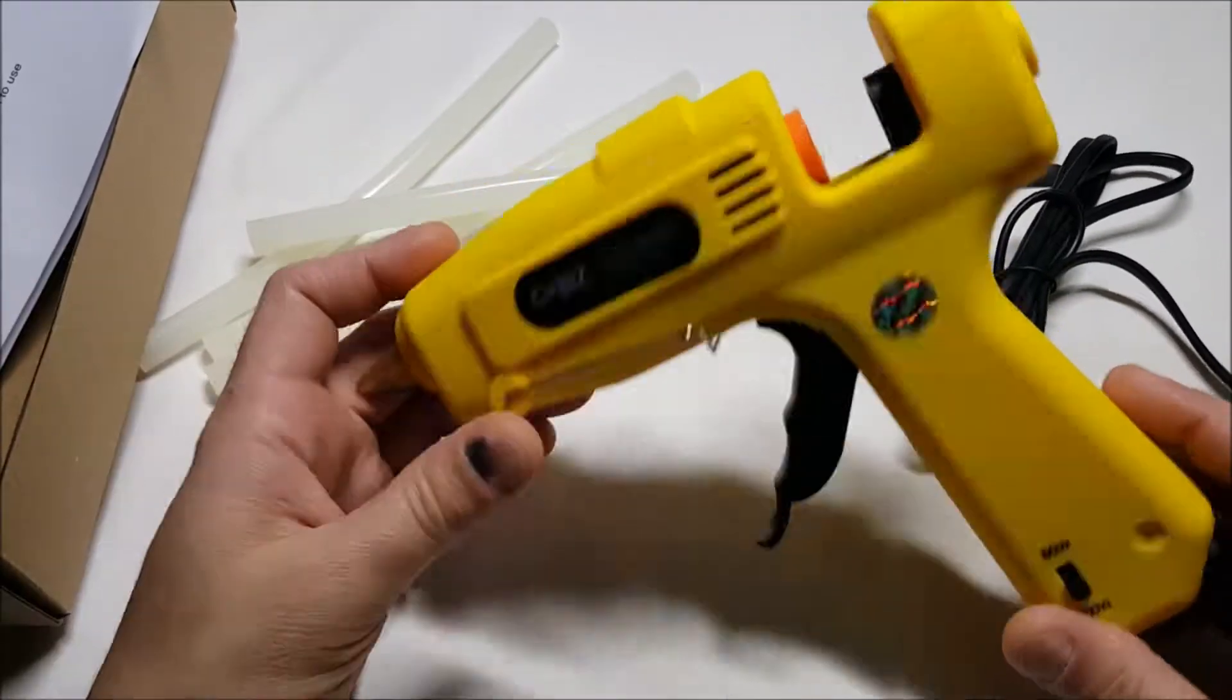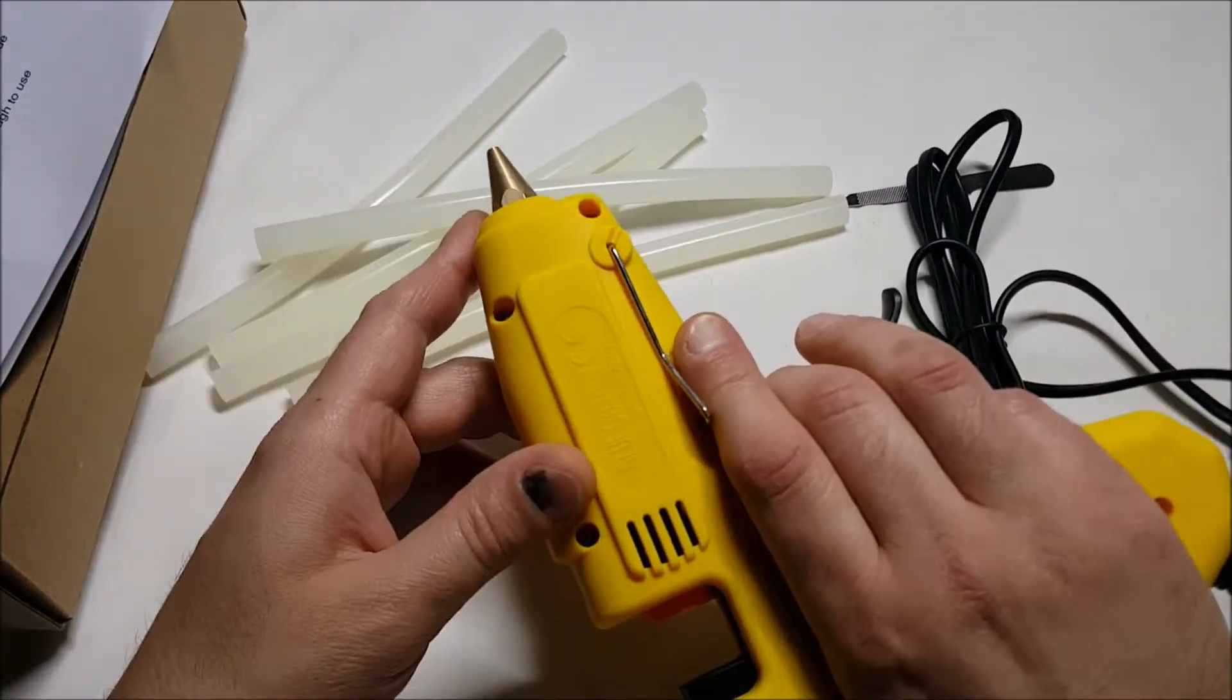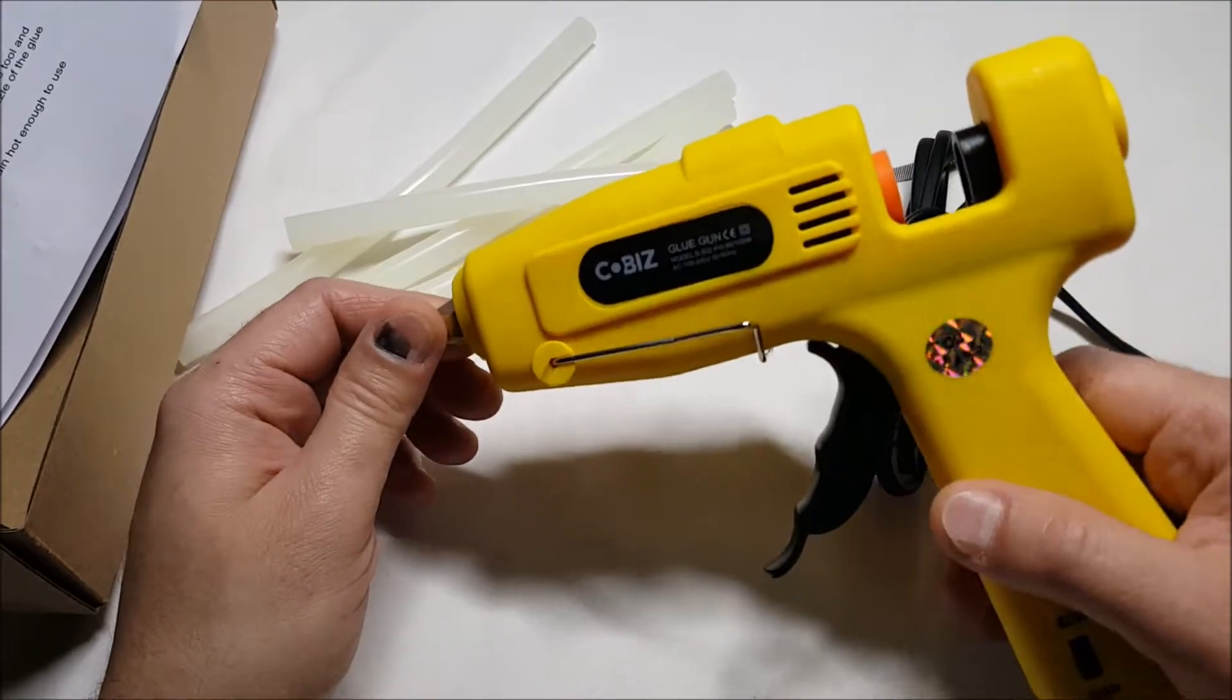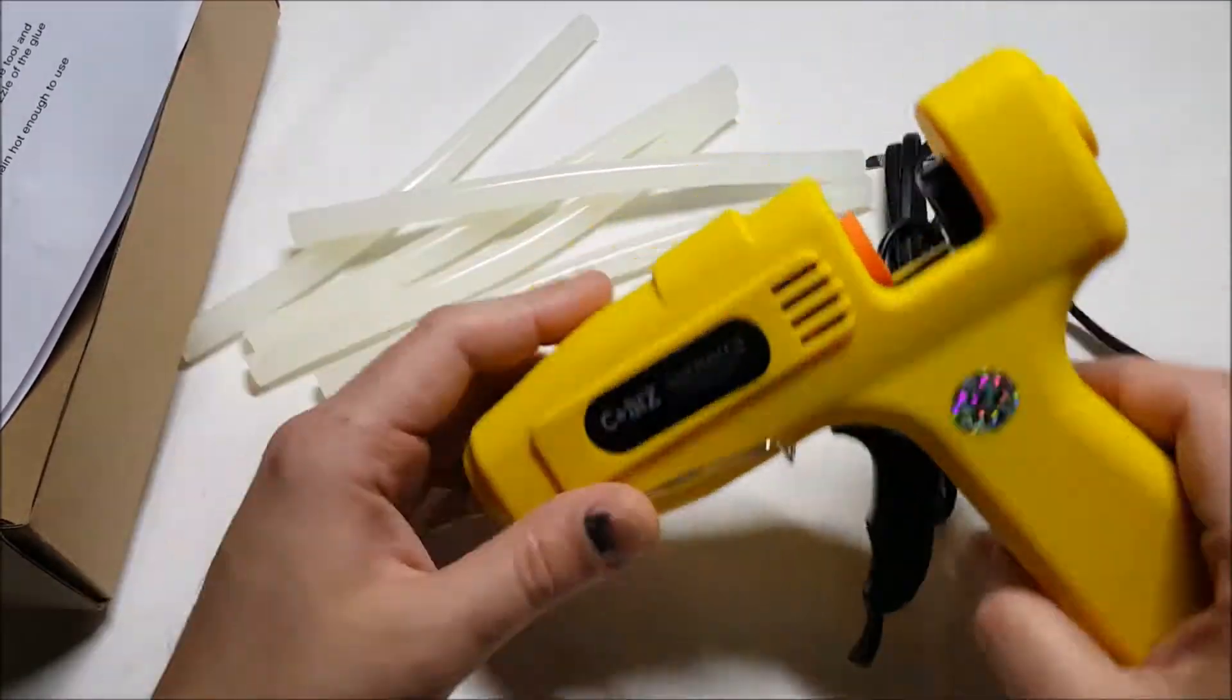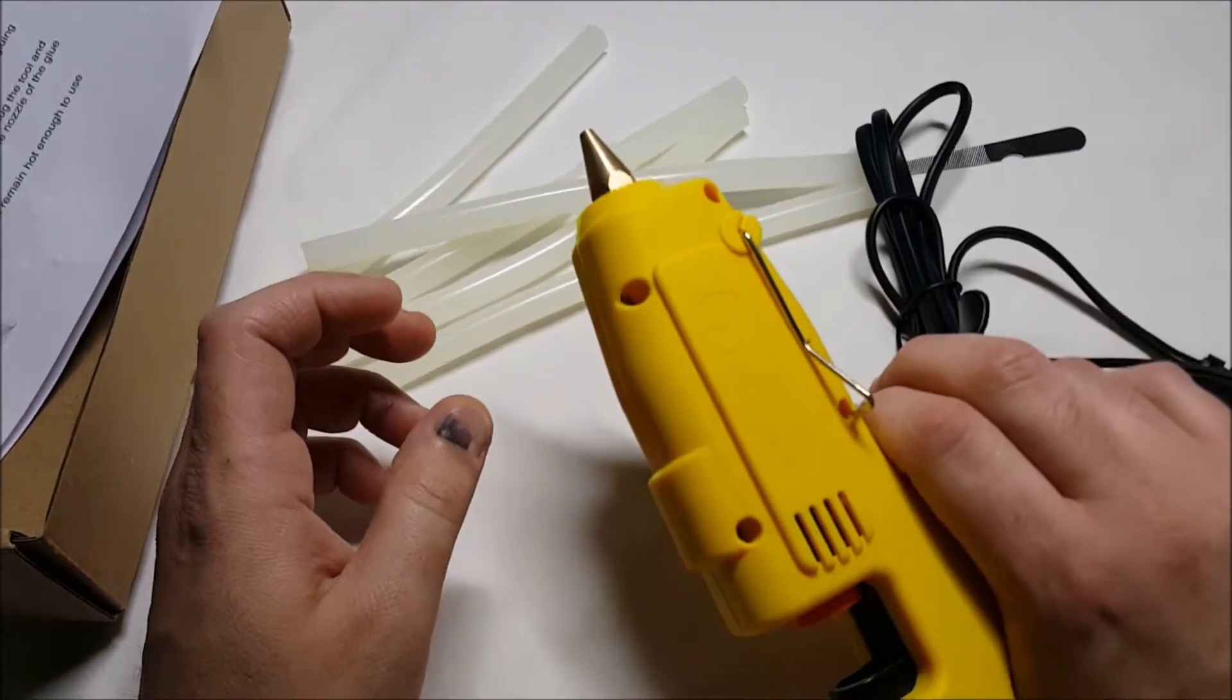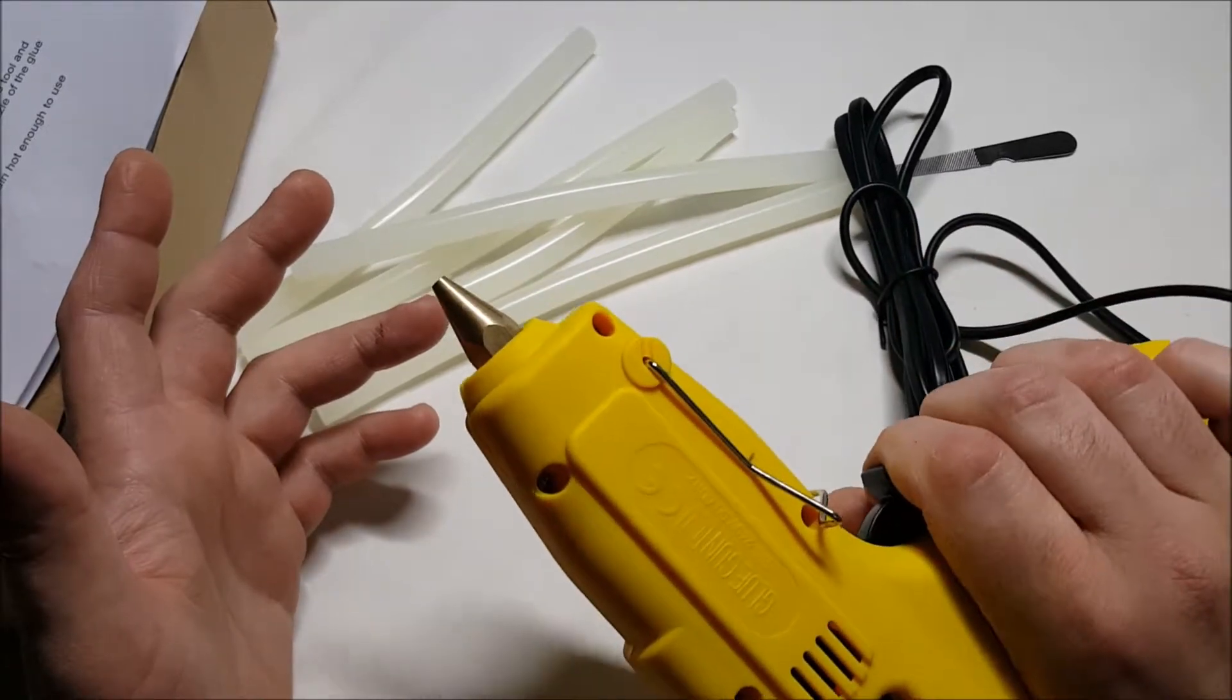It's a glue gun from CoBiz and it feels very heavy-duty, heavyweight. I really like the yellow color of it honestly. My other one's black, the yellow is nice, it has that industrial look to it. You certainly won't lose it. I do like the grip on there, it's a very nice grip.